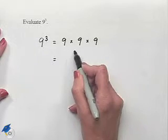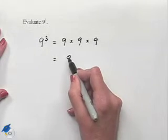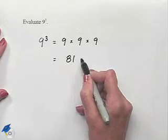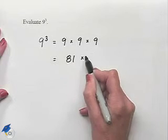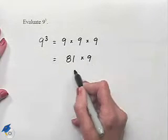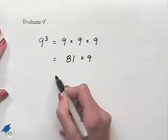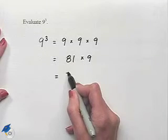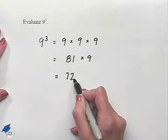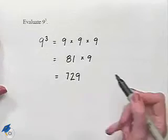We can start by multiplying 9 times 9, giving us a product of 81. We then multiply that times 9, and our product is 729.